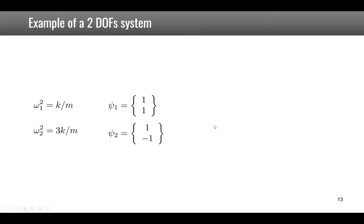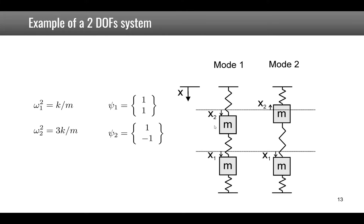This is because if you multiply the mode shape vector by any constant value you will always get zero in the eigenvalue equation, so any scalar multiple of a mode shape is still a mode shape. Here we chose values of 1 and 1.